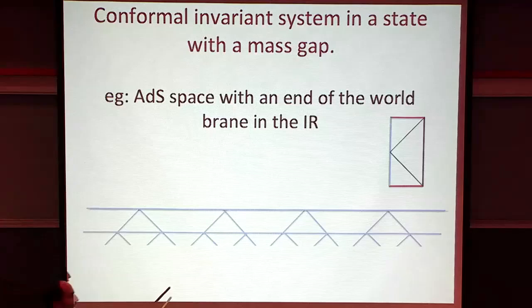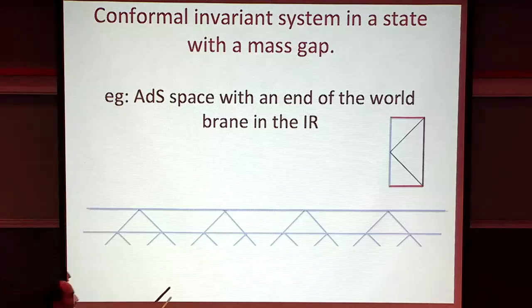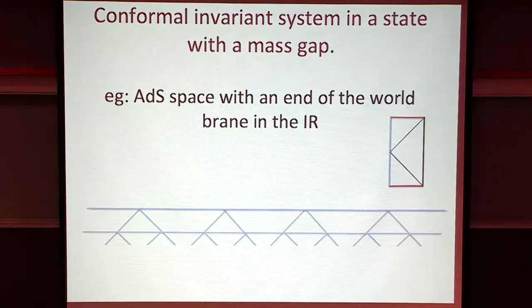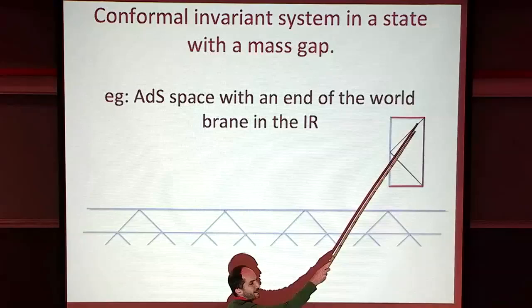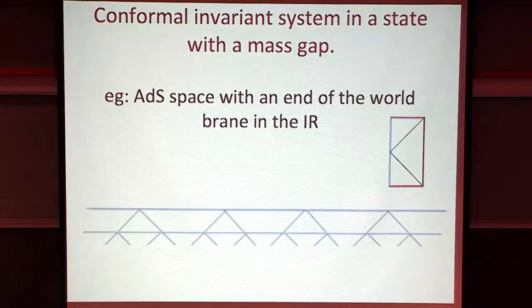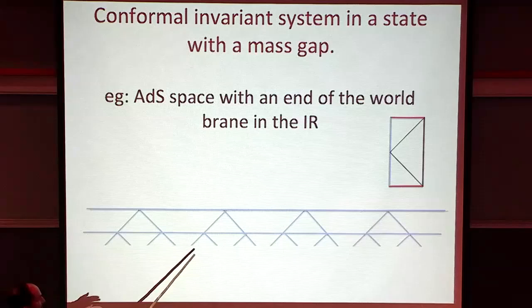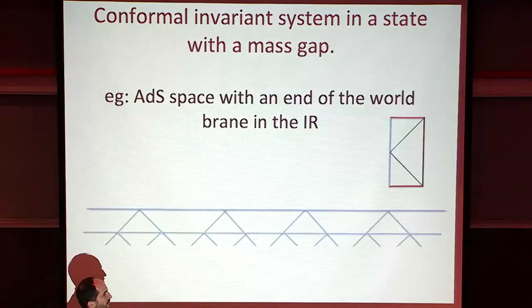An example of such a state would be the following. You have ADS - this is the boundary - and at some point in the interior you have an end-of-the-world brane. ADS does not continue forever; you have some brane there. If you let this brane evolve, it will fall in, create a horizon, and you'll have something which from the outside looks very much like a black hole formed from a pure state.